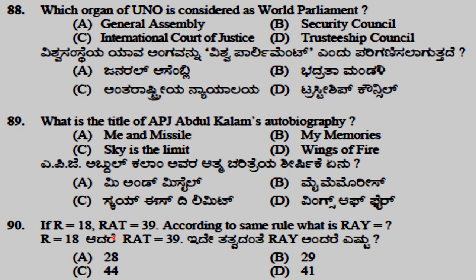If R equals 18 and RAT equals 39, then according to the same rule, RAY equals 44.